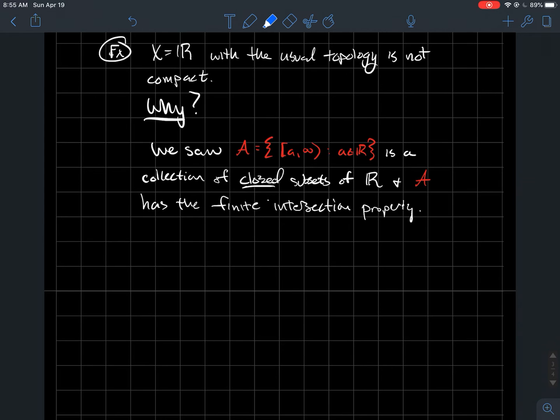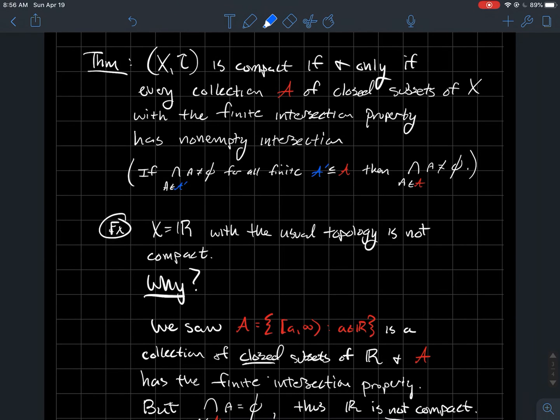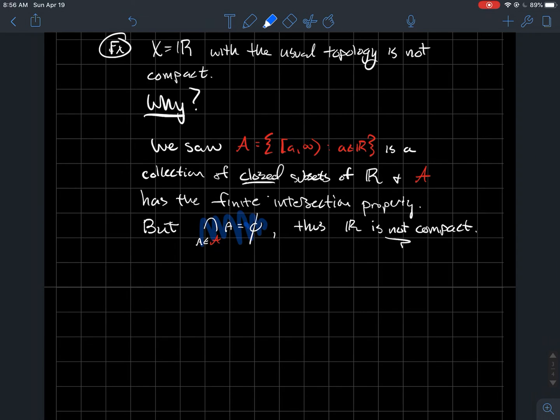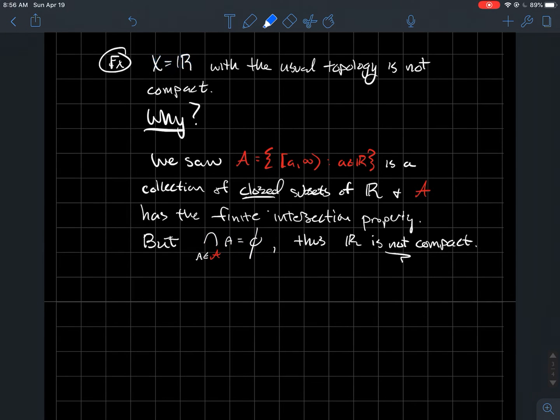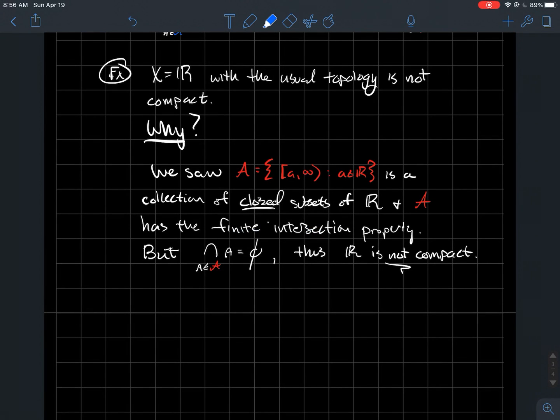this is a collection of closed subsets and this collection had the finite intersection property. If I take finitely many of these intervals, they have non-empty intersection. But when you take the intersection of all intervals in this set, it's empty. Wait, if you had a compact space, then the intersection of all the things also has to be non-empty. That didn't happen here, we got that it's empty. Therefore, your space must not be compact. The space of real numbers must not be compact.